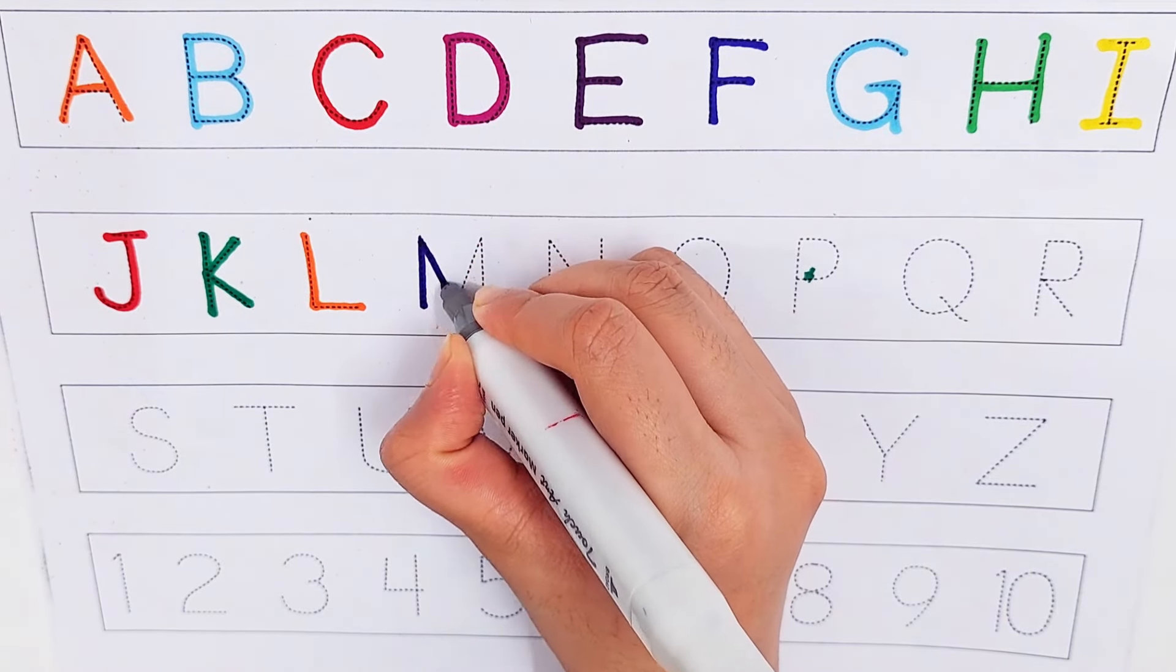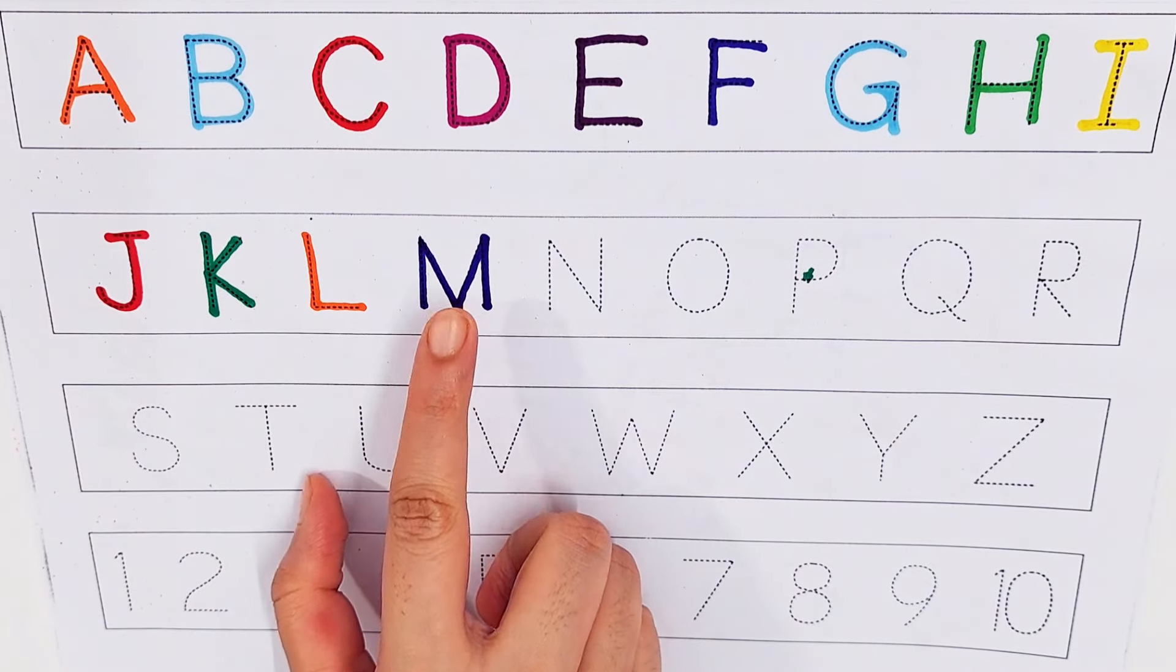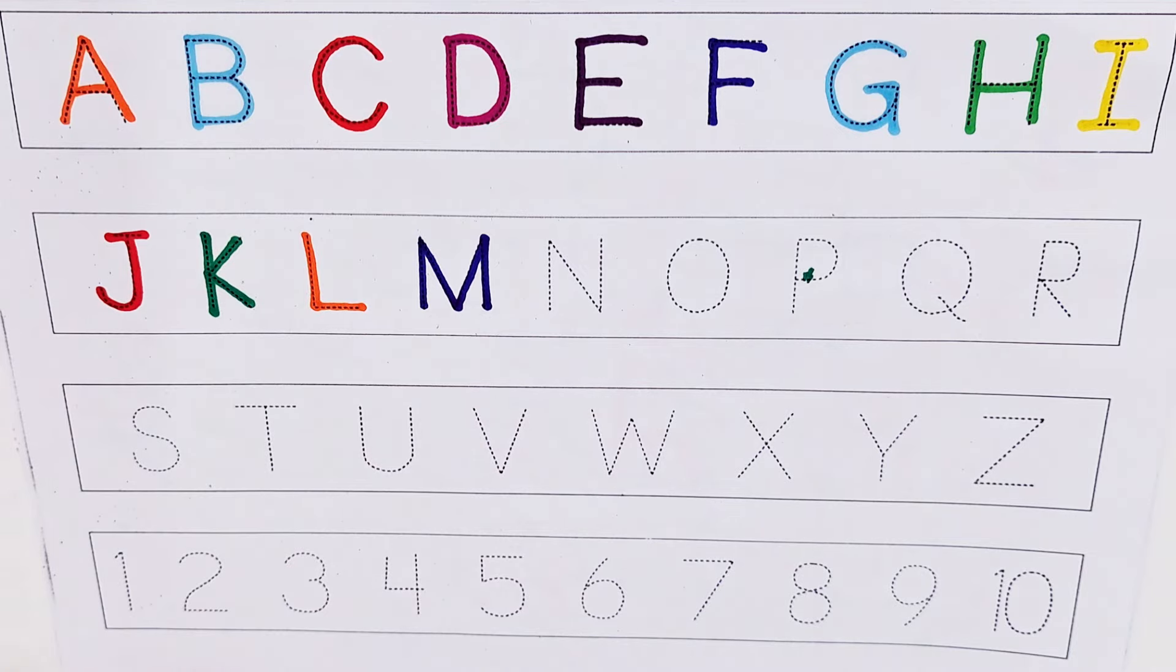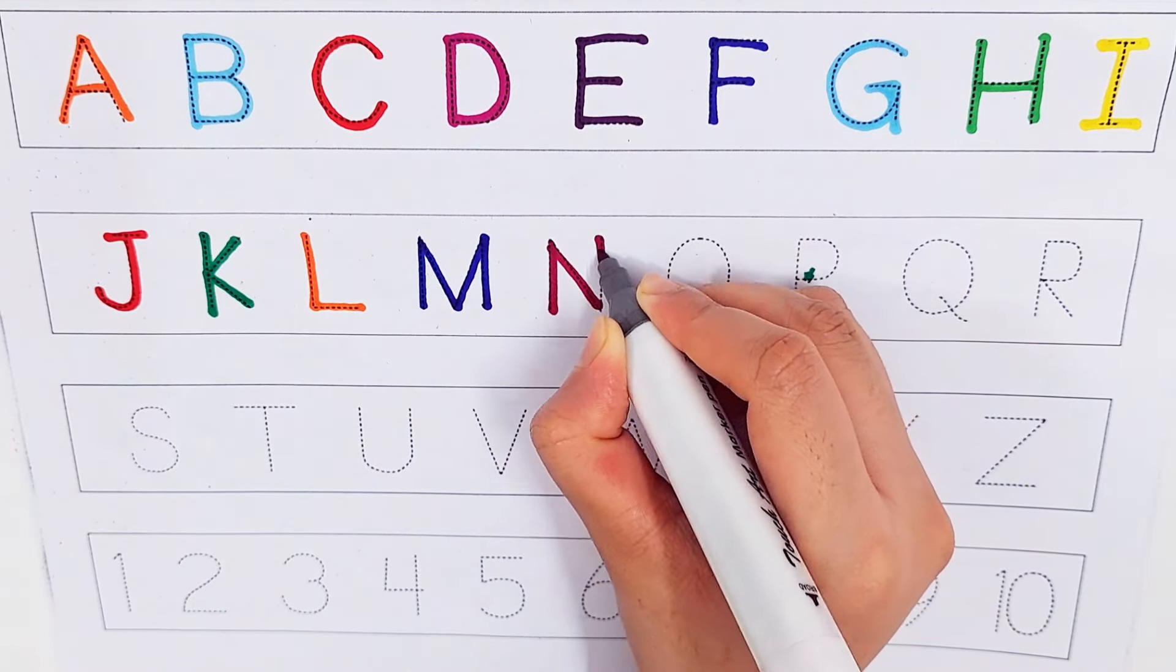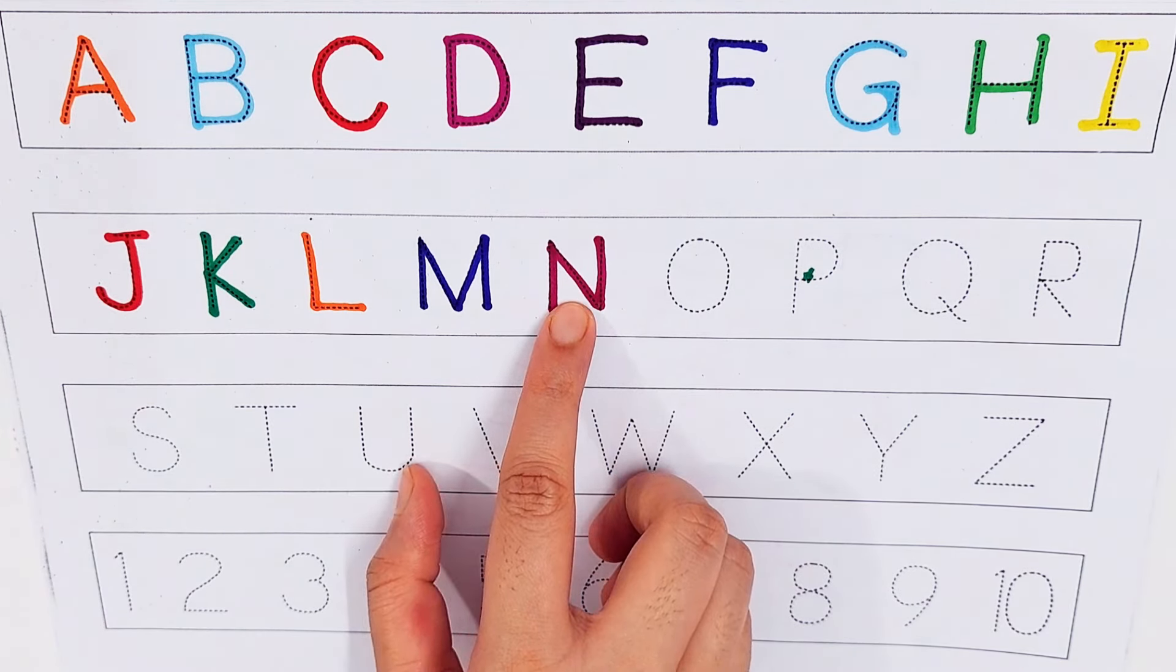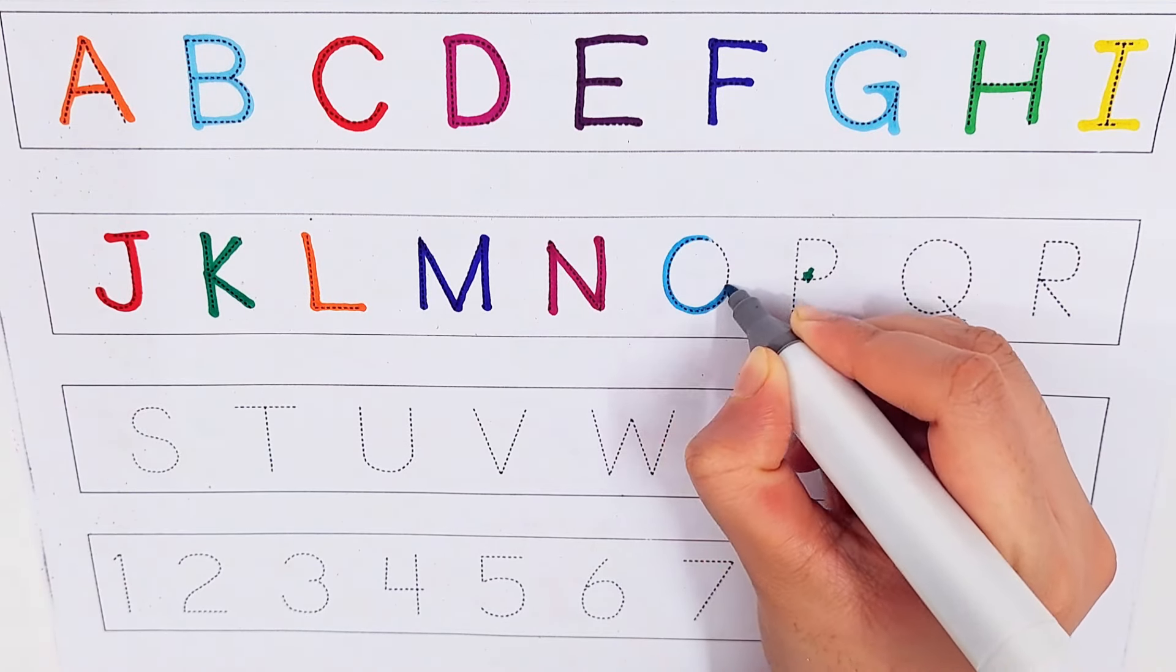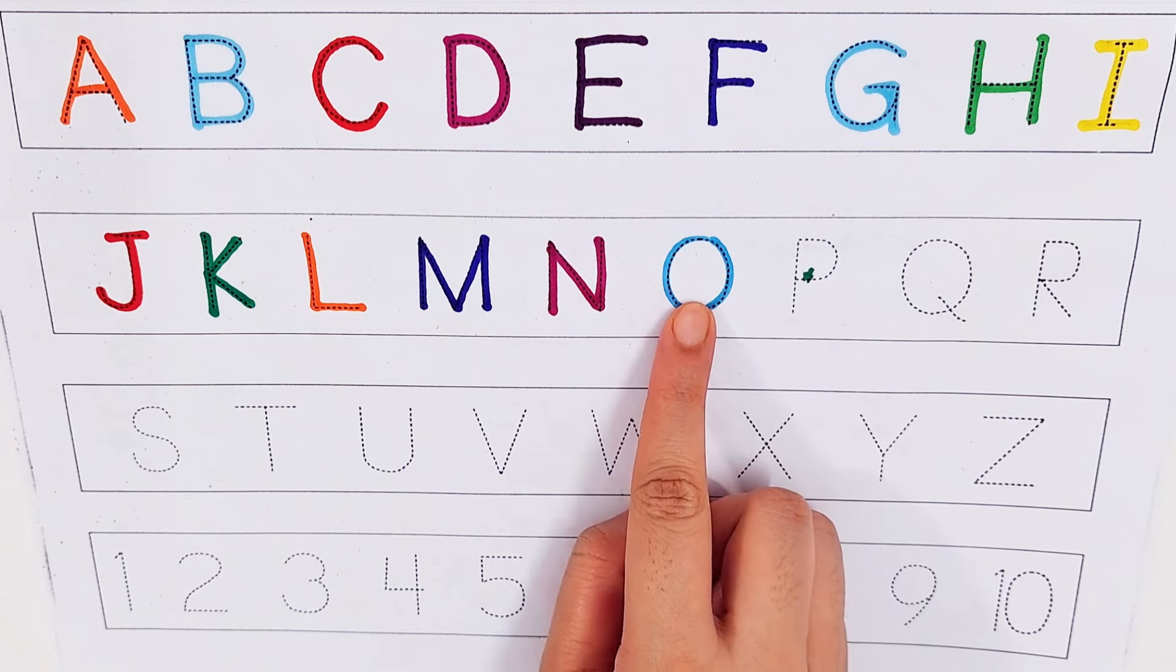M, dark blue color, M for moon, M for man. N, purple color, N for nest, N for nose, N for net.